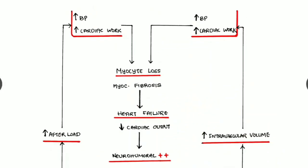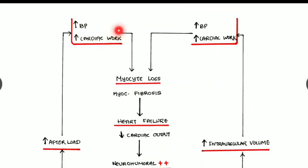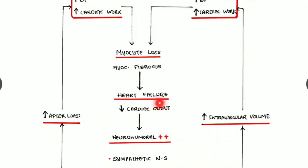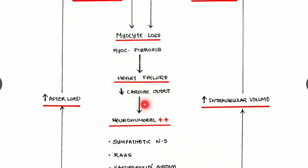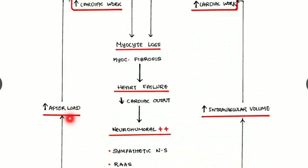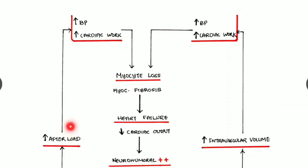This flow chart from Davidson's shows a vicious cycle. Initially, increased blood pressure and increased cardiac workload cause myocyte loss and myocardial fibrosis, leading to heart failure and reduced cardiac output. This stimulates neurohumoral mechanisms: sympathetic nervous system activation, activation of the renin-angiotensin-aldosterone system, and stimulation of the vasopressin system. This causes vasoconstriction, increasing afterload.